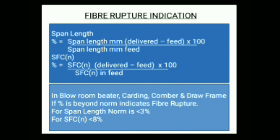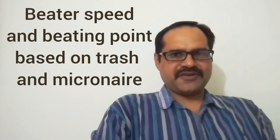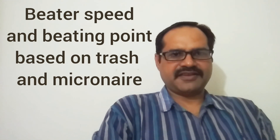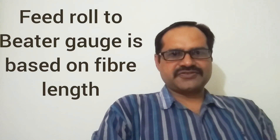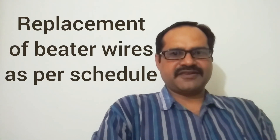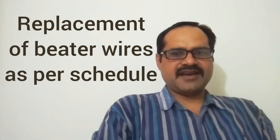The standard for both span length and short fiber content by number is different. If span length is reduced by 3% or more, fiber rupture is taking place. Short fiber content by number should not increase above 8%. Beater speed and beating points in blowroom should be suitable to fiber micronaire and trash percentage in mixing. Feed roll to beater gauge should be suitable to fiber length. Replacement of beater wire should be according to schedule.